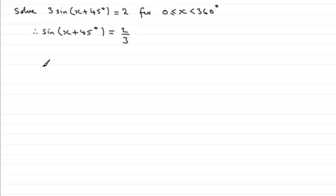What you've got to do to get x + 45° next is to inverse sine both sides. So therefore x + 45° equals the inverse sine of 2/3.